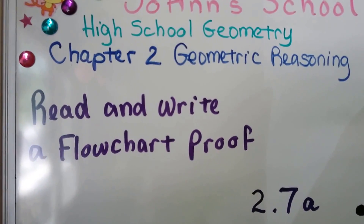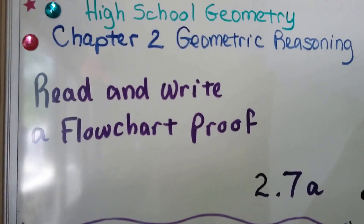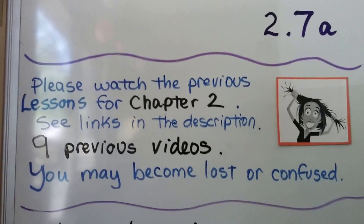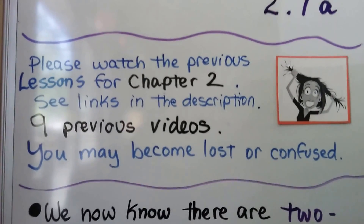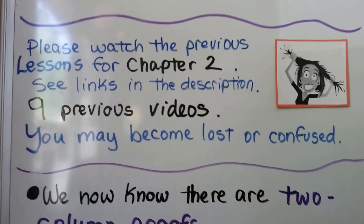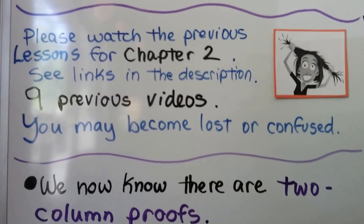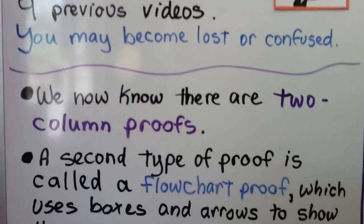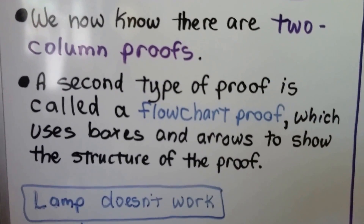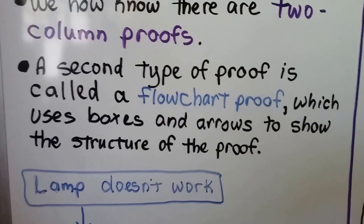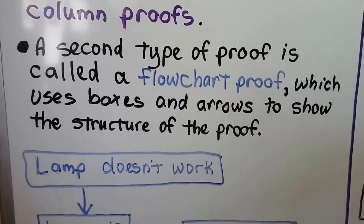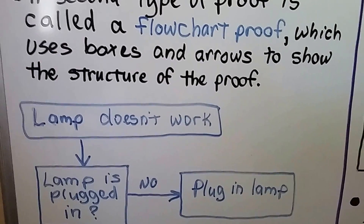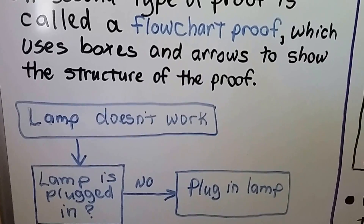We're going to read and write a flowchart proof. This is lesson 2.7a. We have nine previous videos for chapter 2, and if you look in the description, you'll see a link to the geometry playlist so you can watch those. We now know there are two-column proofs, and a second type of proof is called a flowchart proof, which uses boxes and arrows to show the structure of the proof.